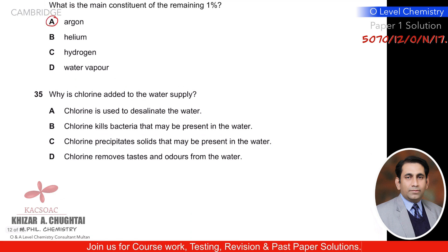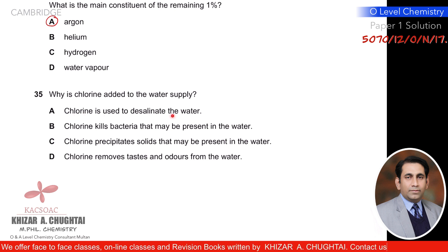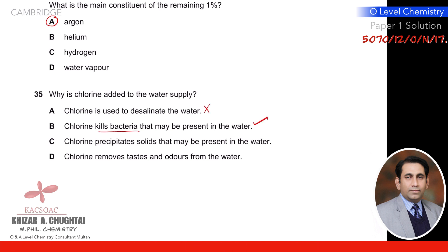Question thirty-five: why is chlorine added to the water supply? To desalinate — no. To kill bacteria that may be present in water — yes. That is the basic function of adding chlorine to water supply.